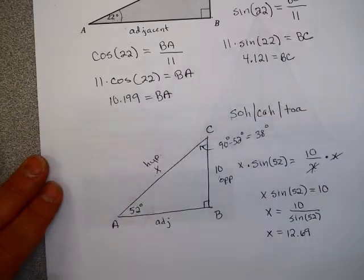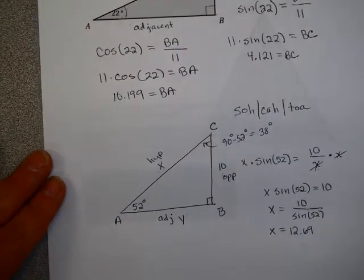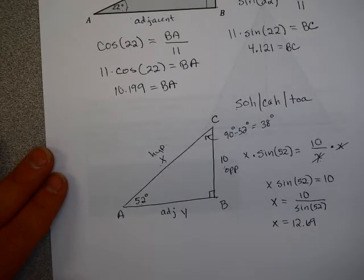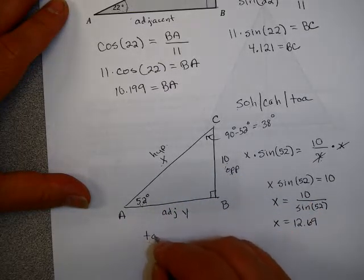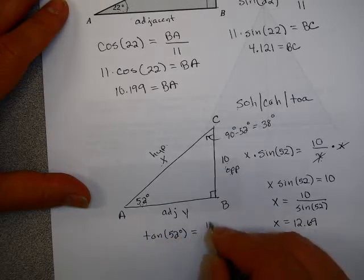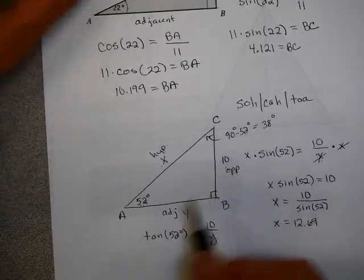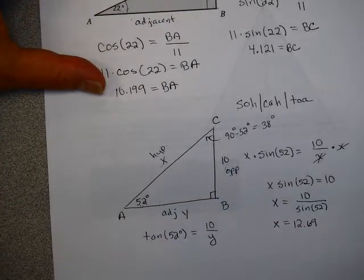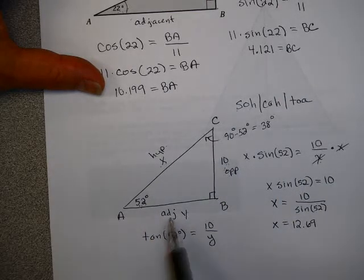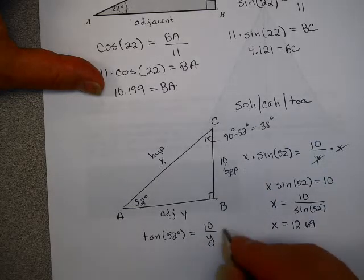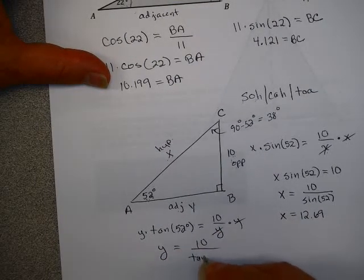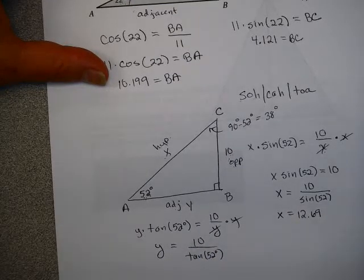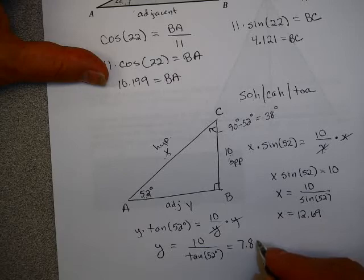Now let's call the adjacent side Y and find it. Using the 52-degree angle, tangent of 52 equals 10 over Y, because I have opposite and adjacent. Multiplying both sides by Y and dividing gives Y equals 10 divided by tangent of 52 degrees, which on the calculator gives 7.813. So that is the process of solving a triangle.